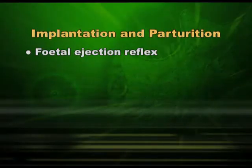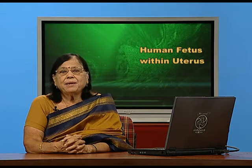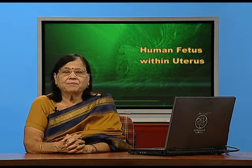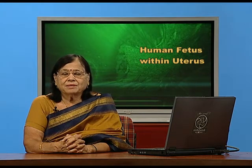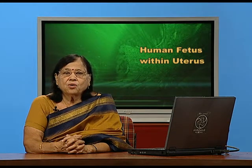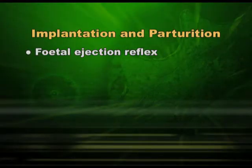You can see fetal ejection reflex, which is happening in the uterine endometrium. The baby is in the uterus and the endometrium is keeping it inside safely. When the hormone oxytocin comes, it will cause downward contraction of the uterus. This is called fetal ejection reflex. This oxytocin is also going to help in milk ejection later. The downward contractions start pushing the baby out through the vagina — this is done by oxytocin.